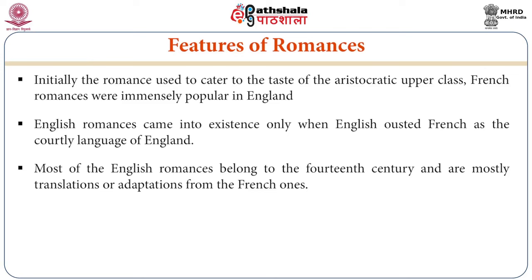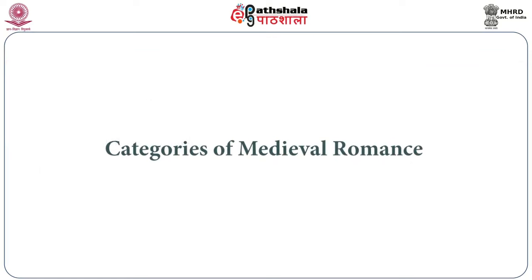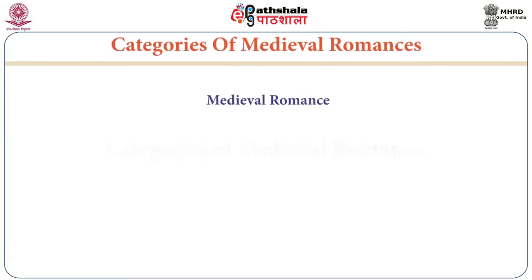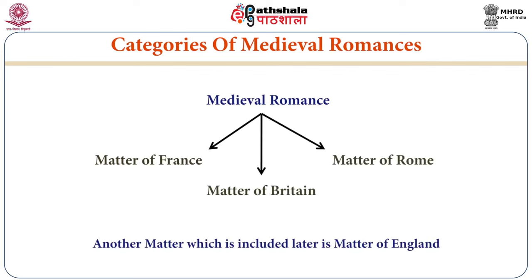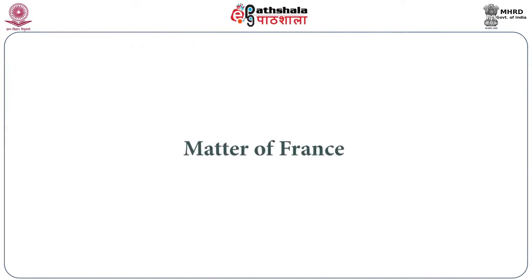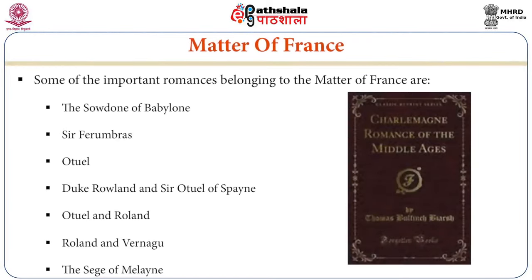Now let us talk about the divisions or categories of romances. Medieval romances are divided into three broad heads: number one, Matter of France; number two, Matter of Britain; and number three, Matter of Rome. Another category included later is the Matter of England. Let us first talk about the Matter of France and some important romances belonging to this particular tradition.